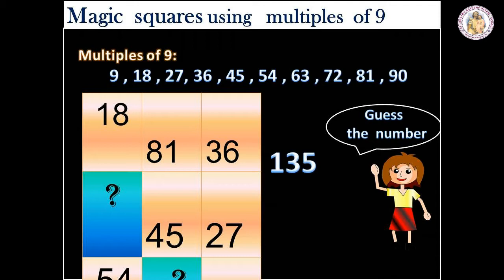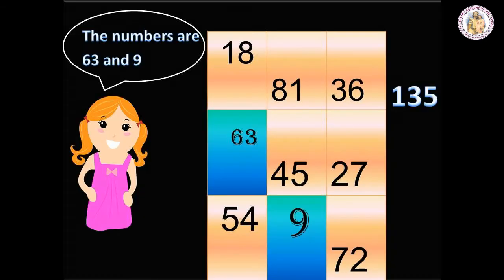Likewise, we have to find another number also. We have to add 54 plus 72 and then subtract this number with the 135. Did you guess the number? Yes, the numbers are 63 and 9.